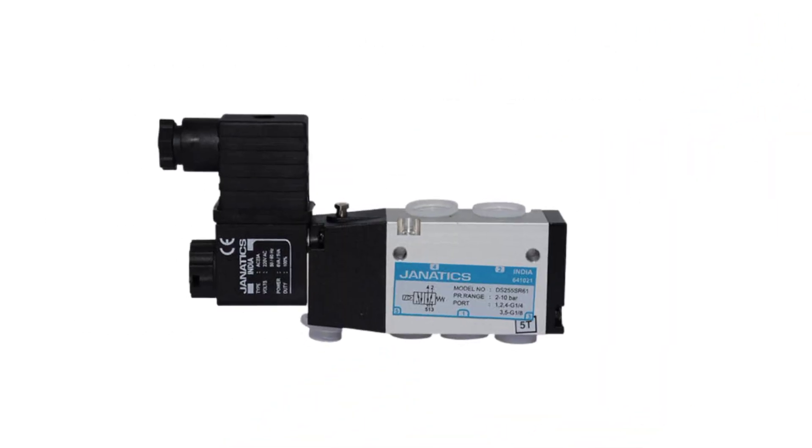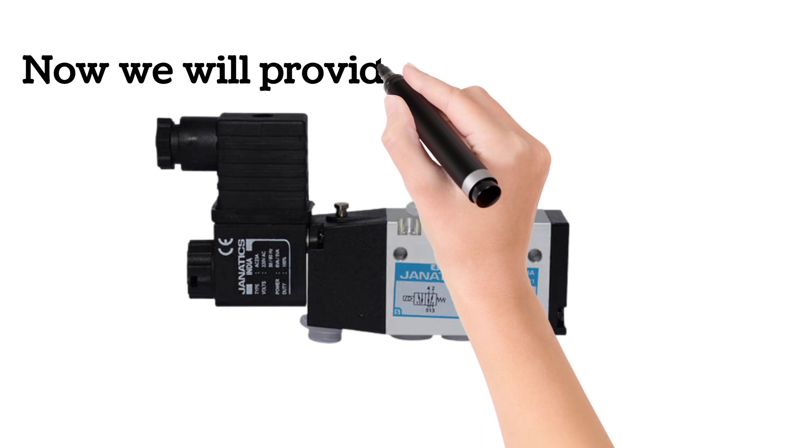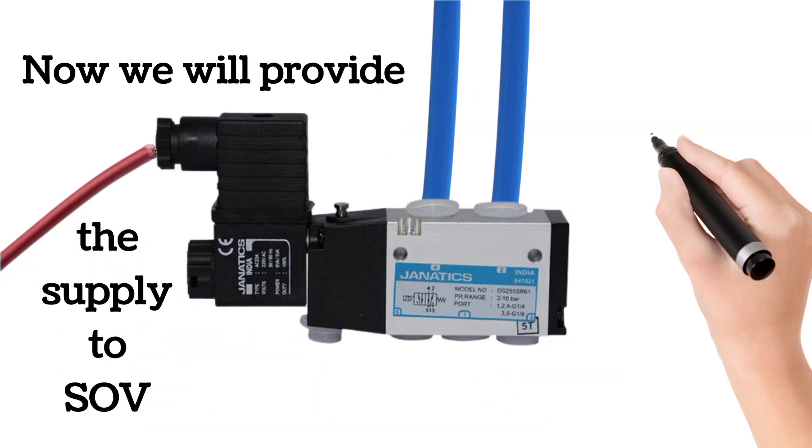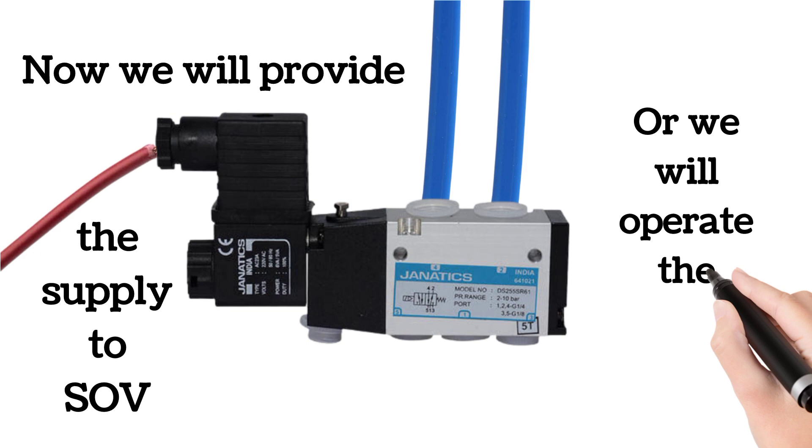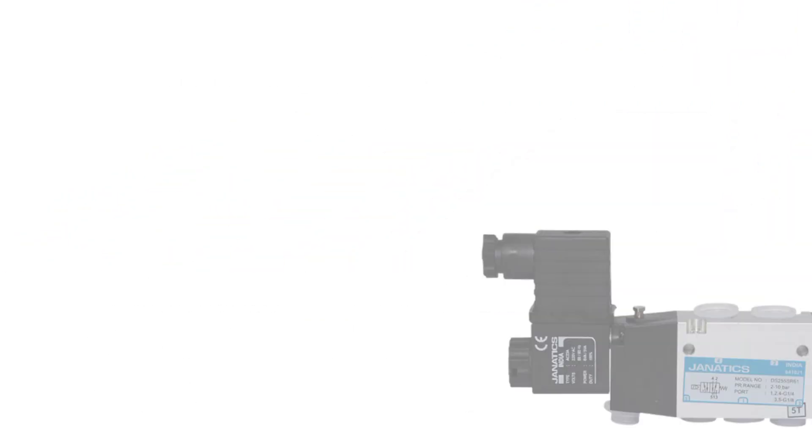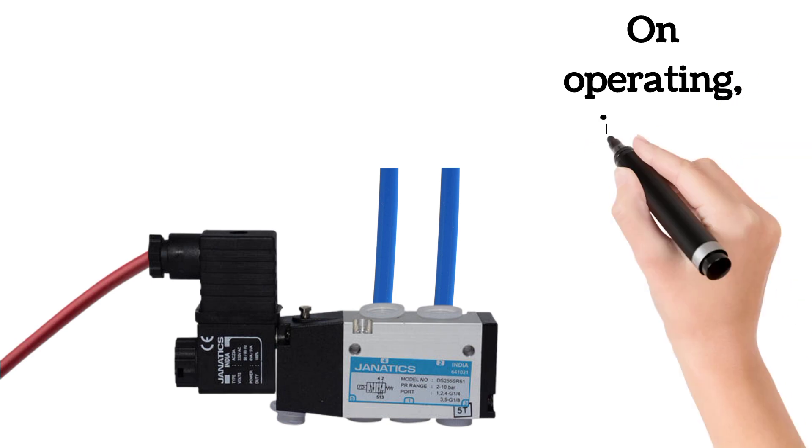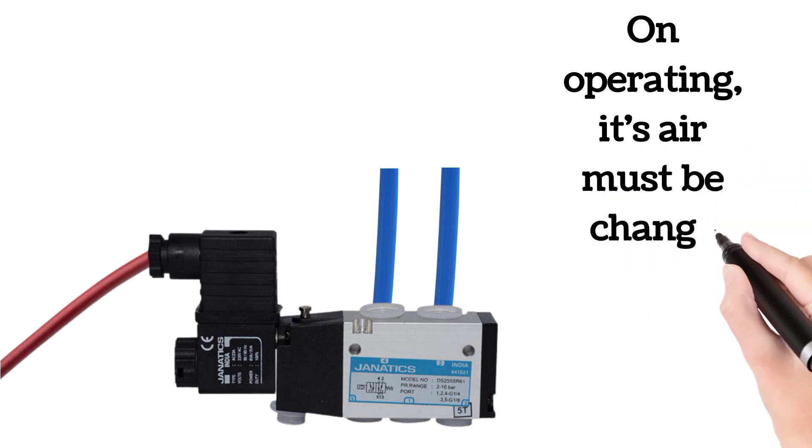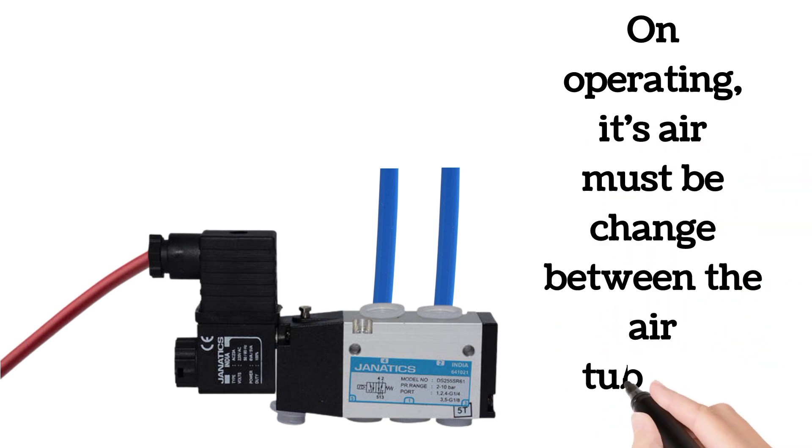Now, we will provide the supply to SOV or we will operate the pneumatic cylinder. When the pneumatic cylinder is operated, the supply is reached at solenoid coil. When the pneumatic cylinder is operated, or we can say the supply is provided, air must be changed between the air tubings.